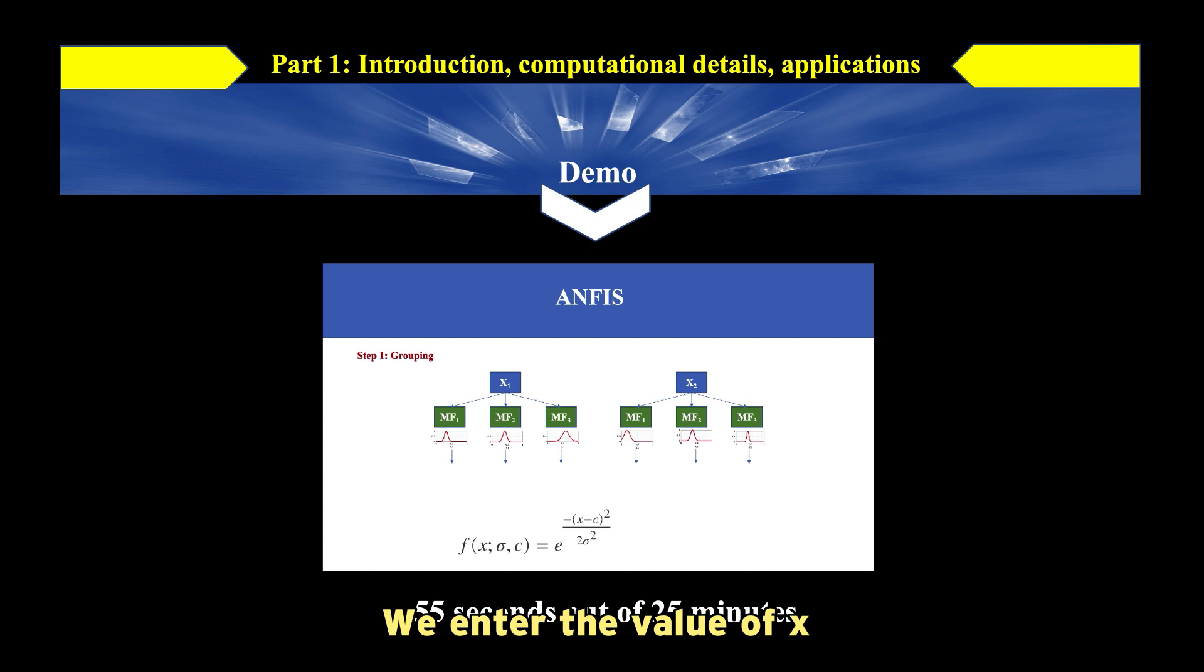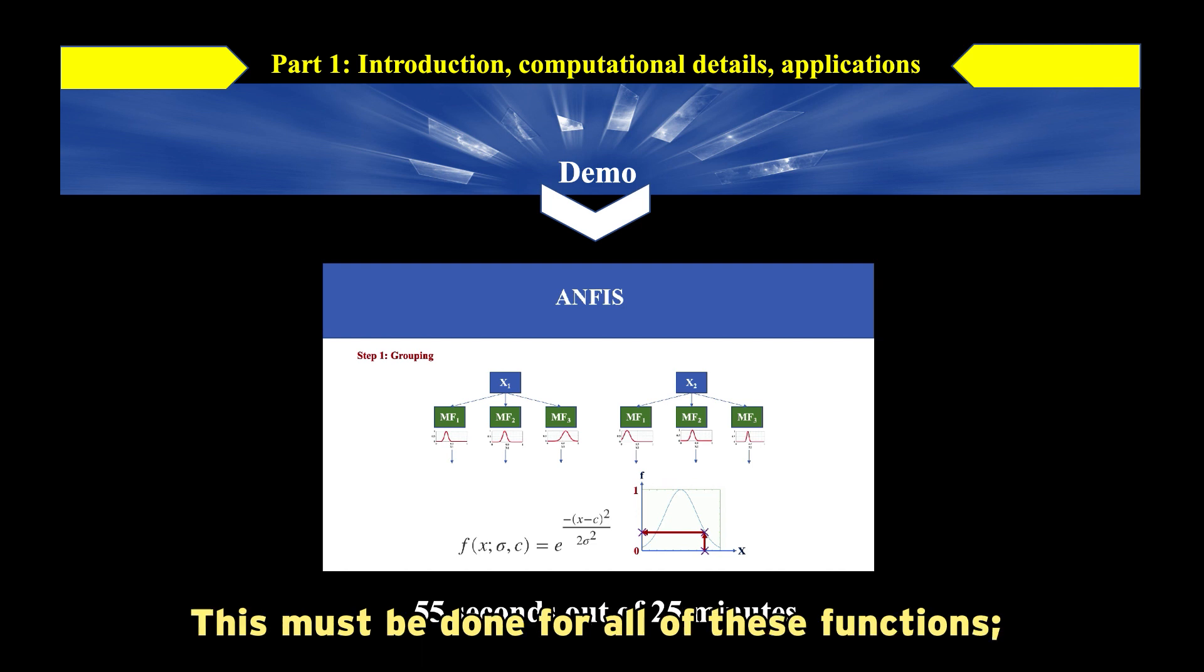We enter the value of x into the Gaussian function and read the value of the function, which is a number between 0 and 1. That shows the degree of belonging of x to MF1. This must be done for all of these functions.